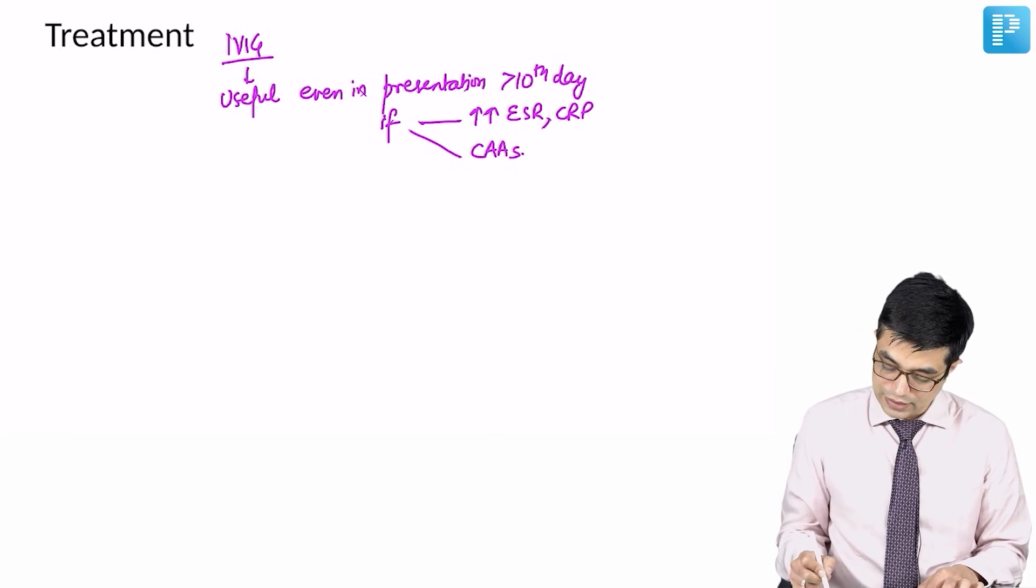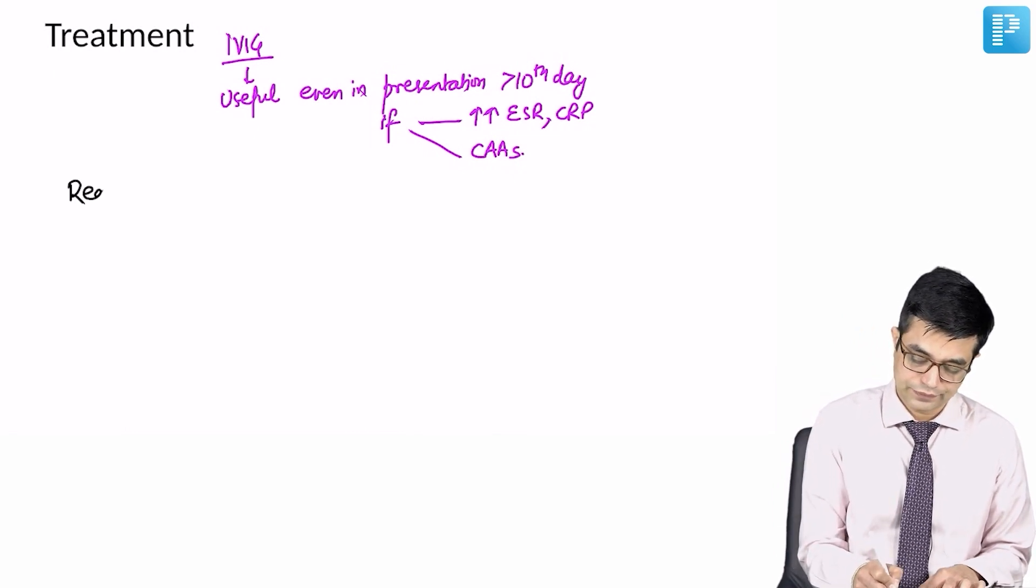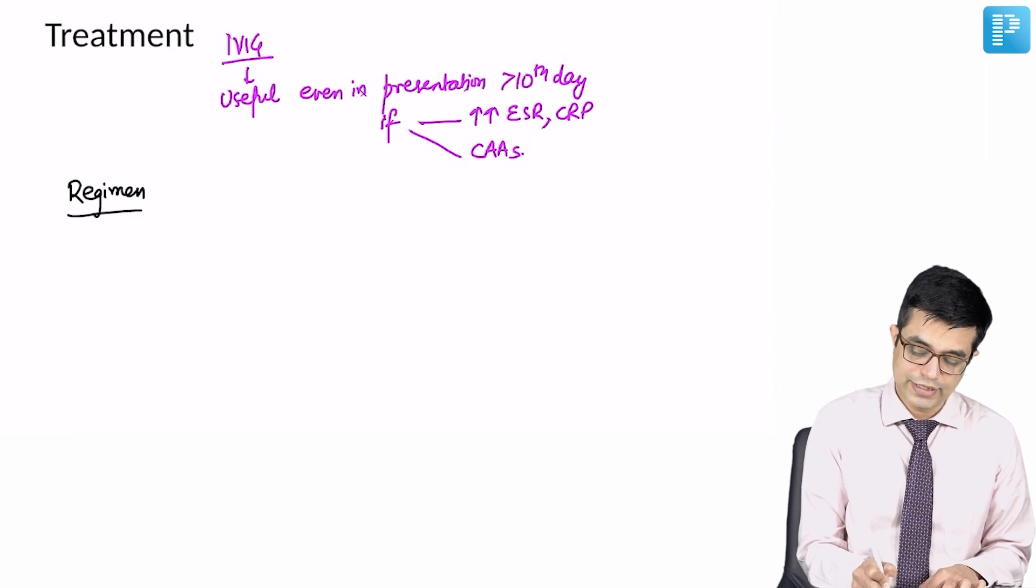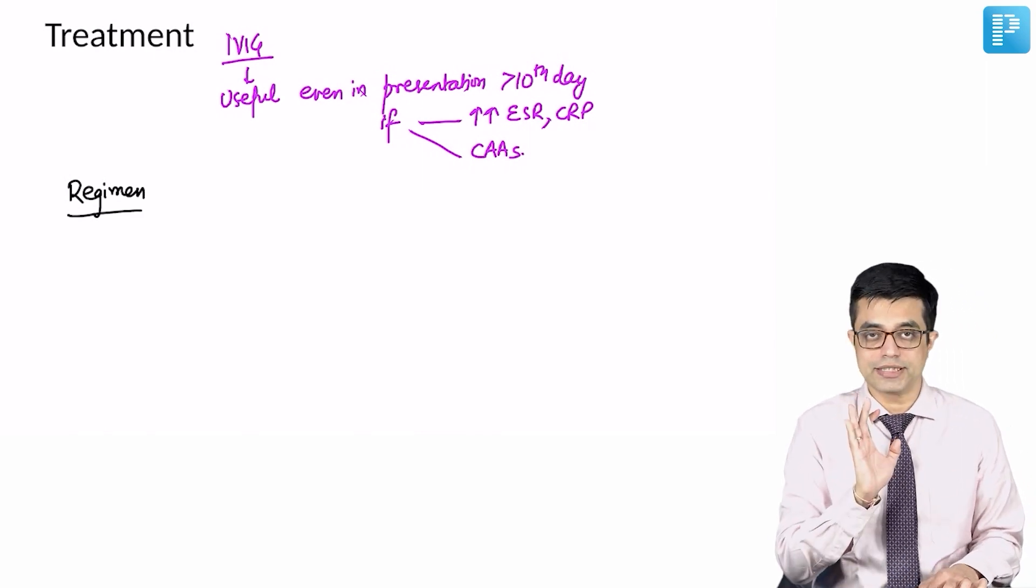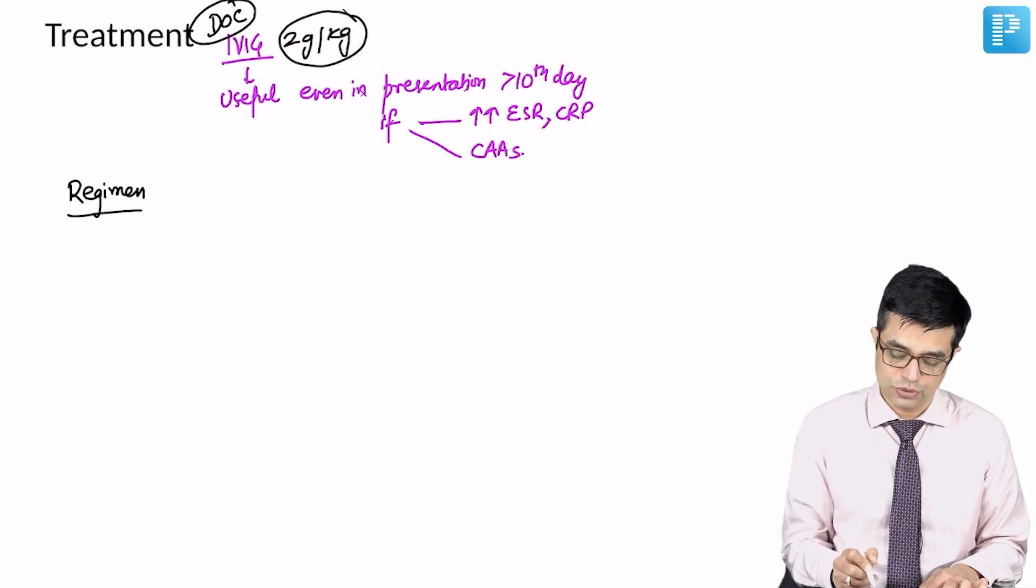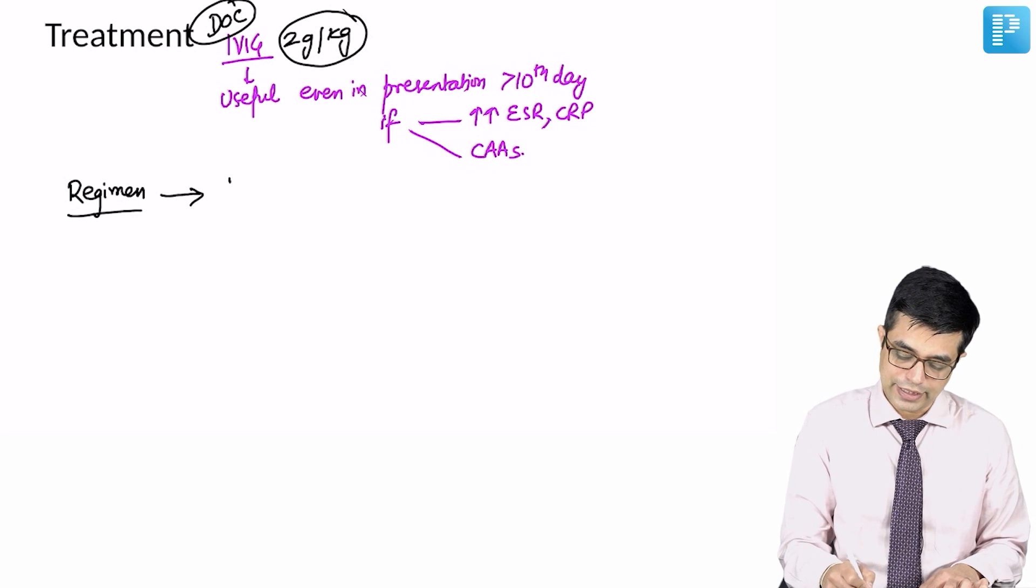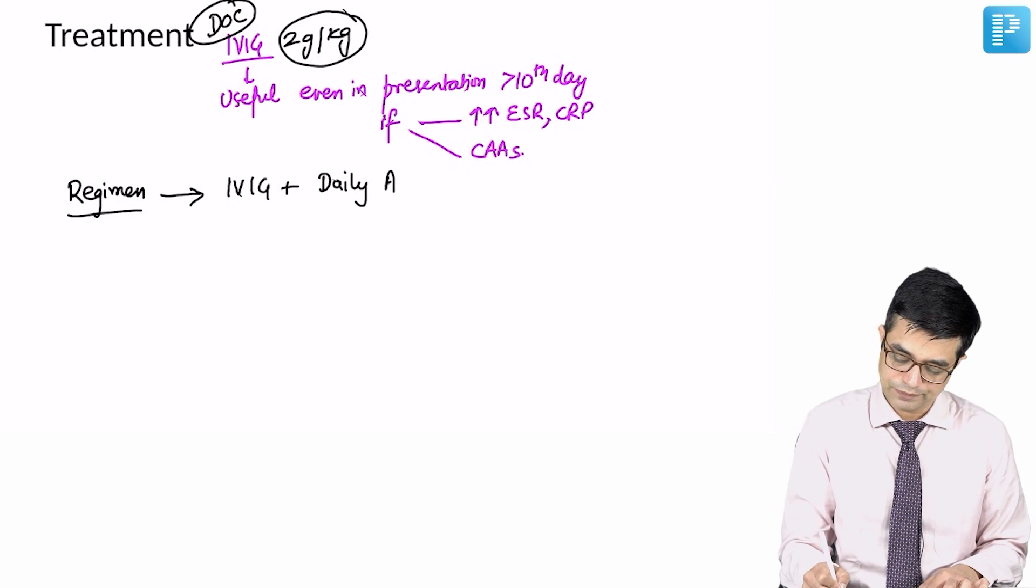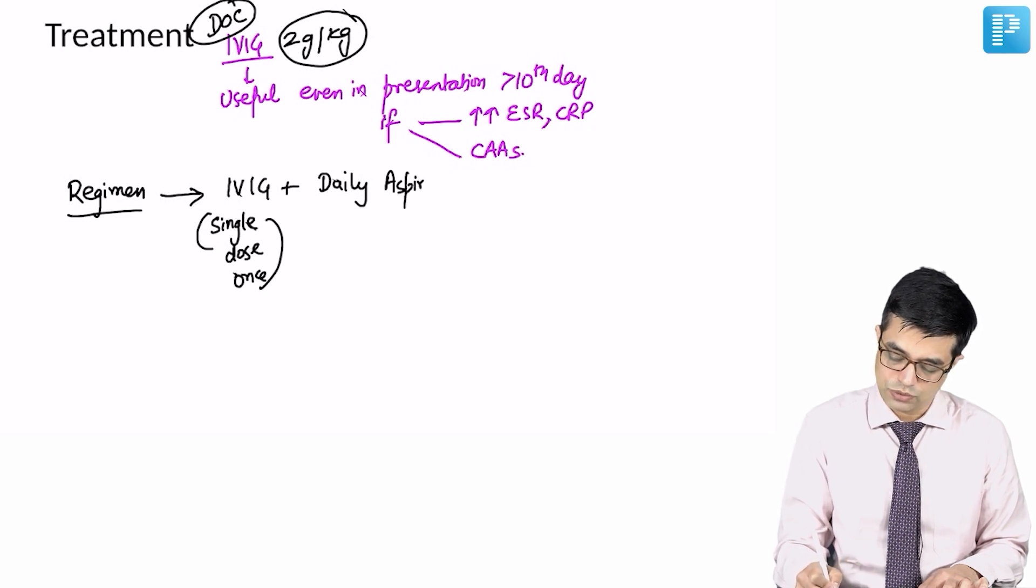Now, what is the therapeutic regimen of choice? When they ask drug of choice, it is IVIG. So, IVIG is the drug of choice. Dose 2 gram per kg, single infusion whereas regimen is combination of IVIG along with daily aspirin. IVIG is given single dose only once whereas you give daily aspirin to the patient.